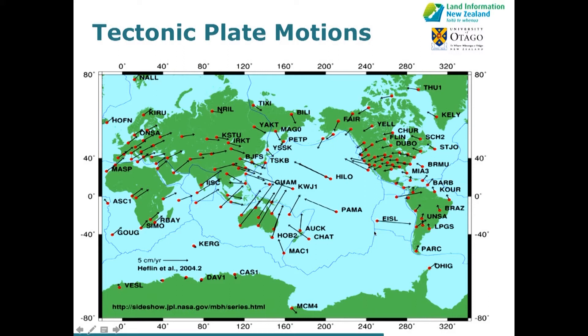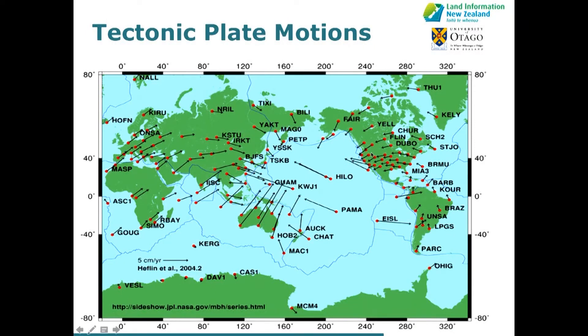This blue line here is the boundary between — going over to New Zealand — the Australian and the Pacific plate. Away from boundaries, plates move rigidly, which really means they rotate. You can see this beautifully in the velocities from continuous GPS stations in North America, where the plate is obviously rotating counterclockwise around a point to the south of South America. That point is called an Euler pole. As a consequence, the velocities aren't the same everywhere in a plate.